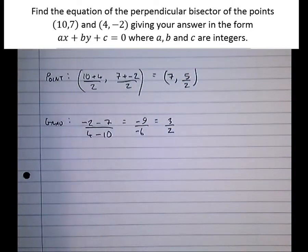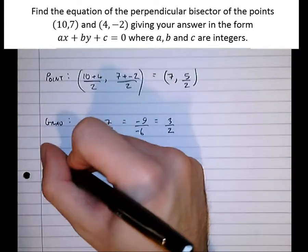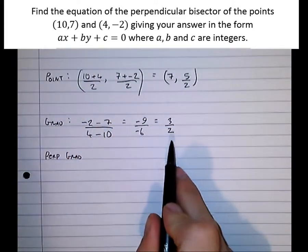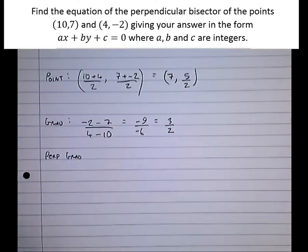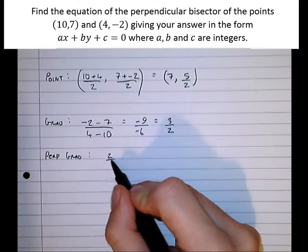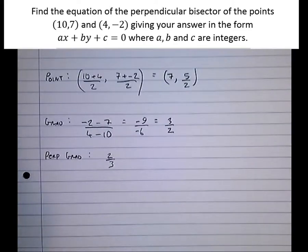So we've got that so far. Now, the perpendicular gradient is the negative reciprocal of the gradient, and that's just a fact you have to remember. So to find the negative reciprocal, we need to flip it. First of all, find the reciprocal: 2 thirds. Then make it negative, change the sign: minus 2 thirds.